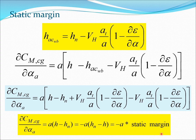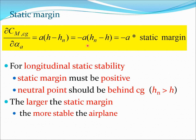The derivative of CMCG with respect to alpha is proportional to the static margin with a negative sign. For this derivative to be negative — the stability requirement — the static margin must be positive, since A, the lift curve slope, is always positive. For longitudinal static stability: static margin must be positive, and the neutral point must be behind the CG so that HN is greater than H. Also, the larger the static margin, the more stable the airplane. For example, small training aircraft are typically very stable so that novice pilots do not encounter instability, and the airplane quickly returns to its position after any gust or disturbance.